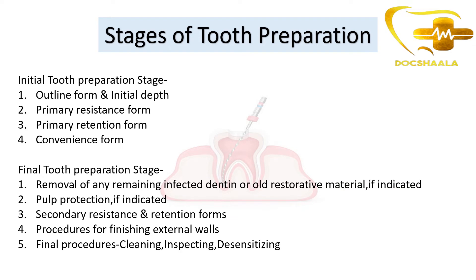We have an initial tooth preparation stage and a final tooth preparation stage. In the initial tooth preparation stage we have four steps: outline form and initial depth, primary resistance form, primary retention form, and convenience form. In the final tooth preparation stage we have five steps: removal of any remaining infected dentin or old restorative material if indicated, pulp protection if indicated, secondary resistance and retention forms, procedures for finishing external walls, and final procedures which are cleaning, inspecting, and desensitizing.